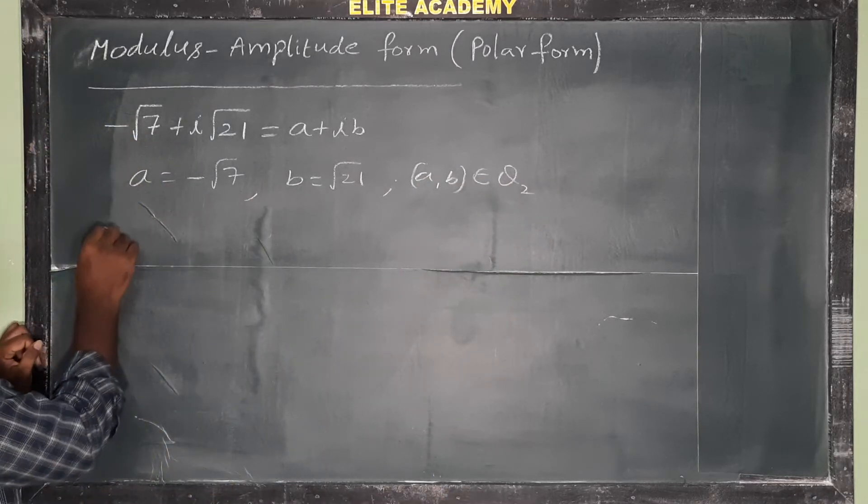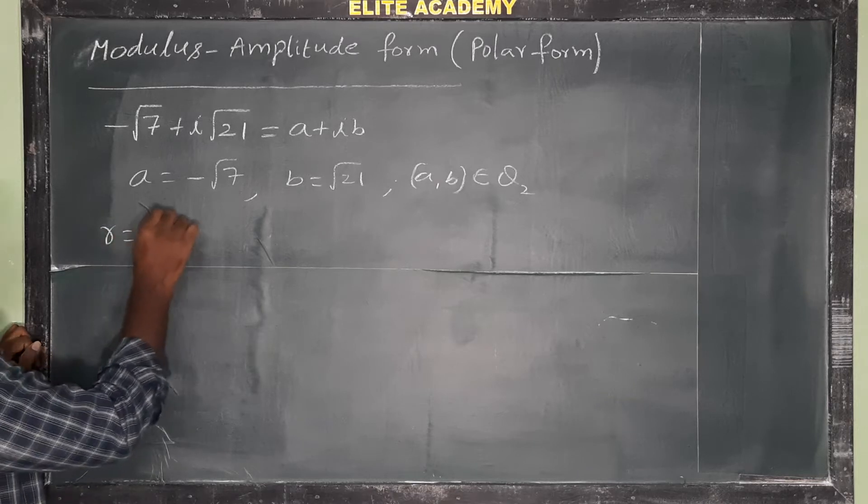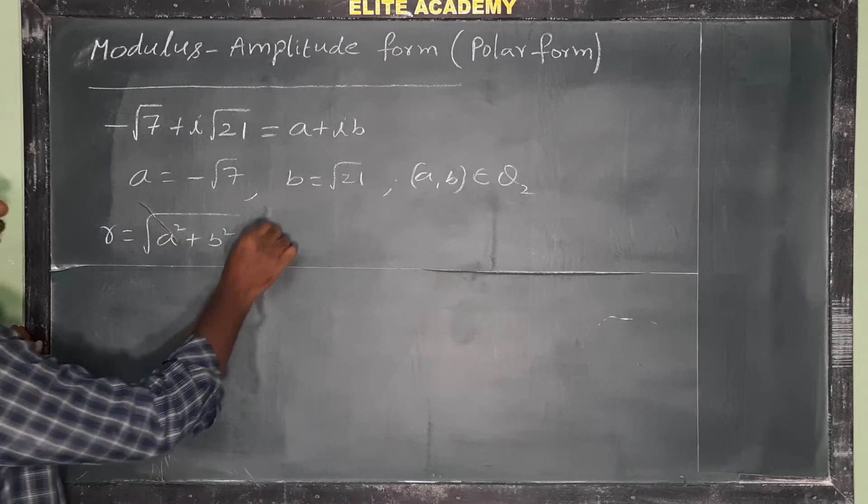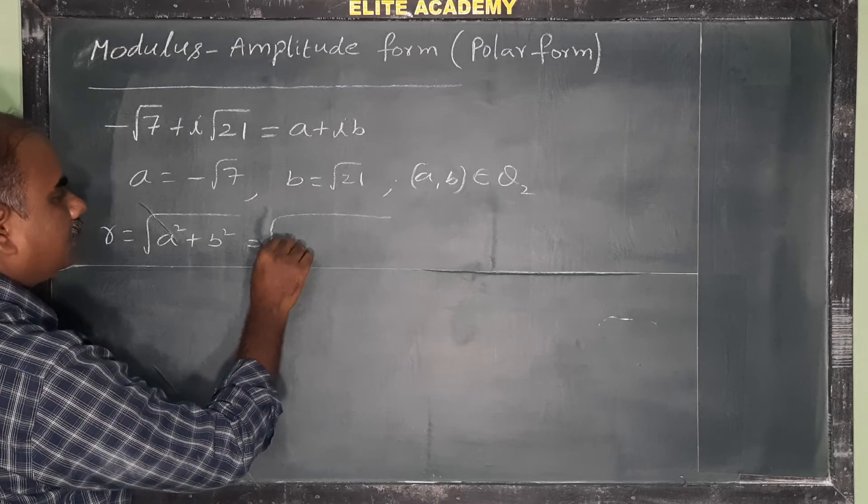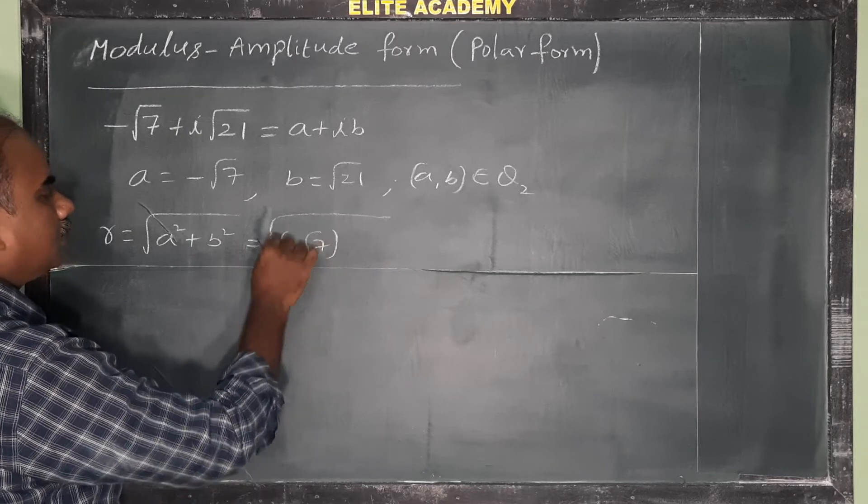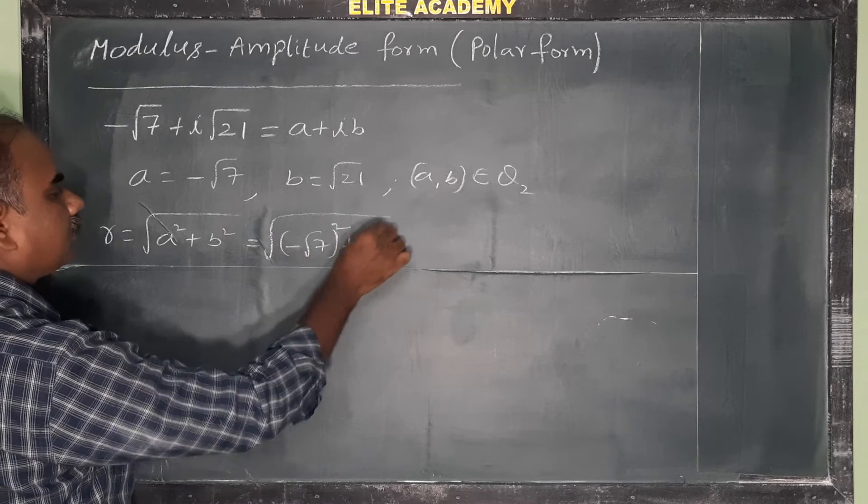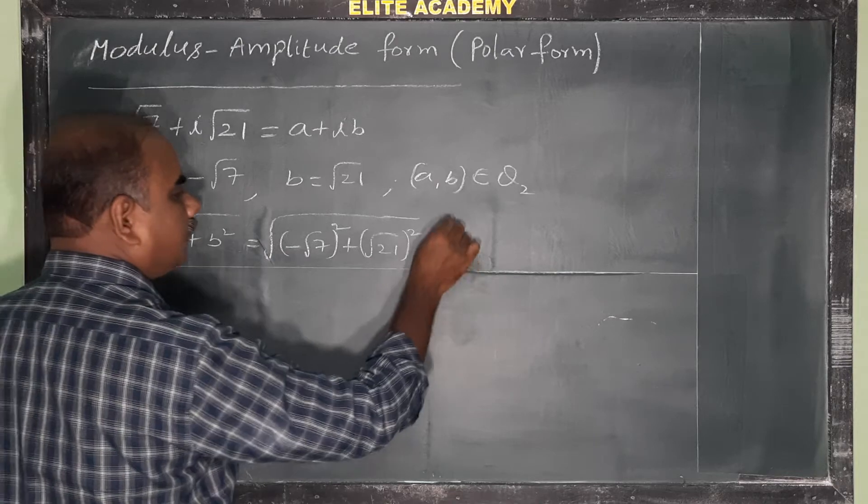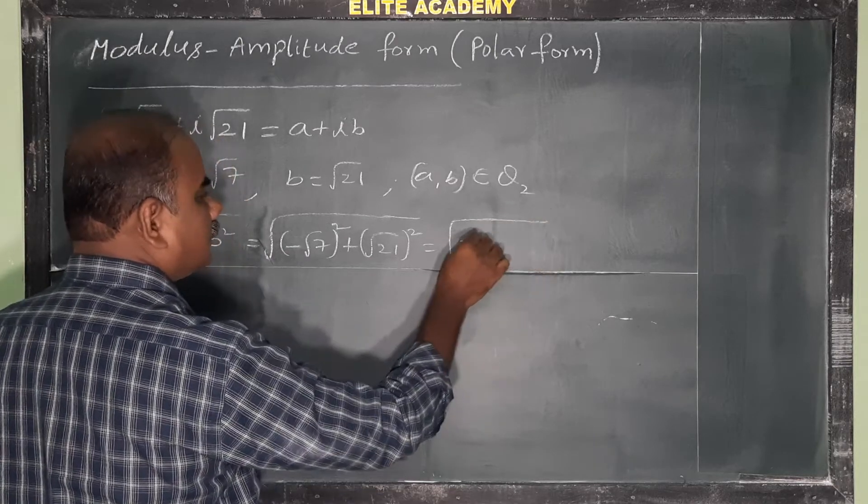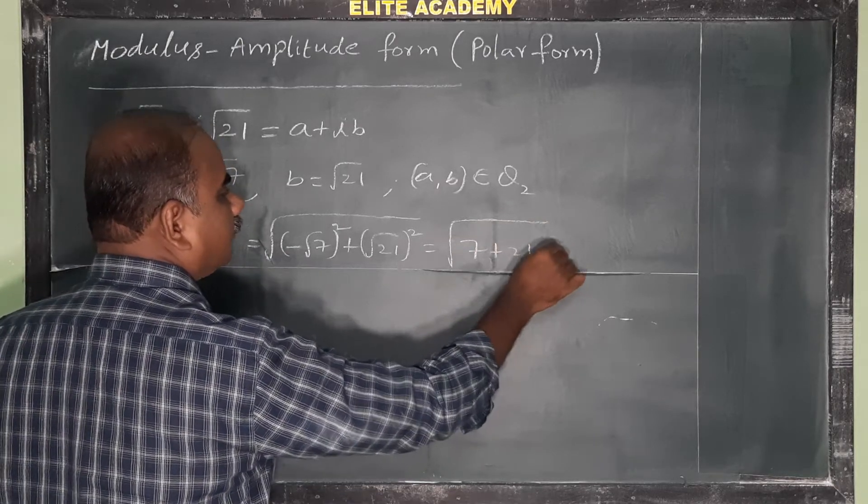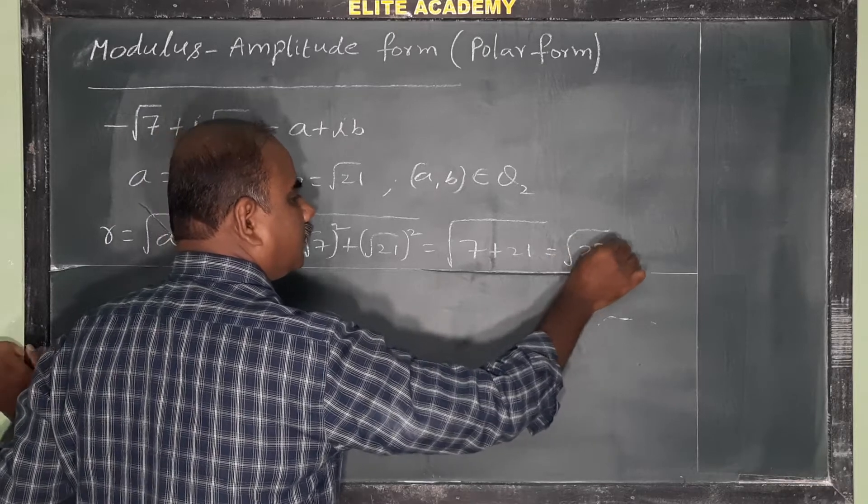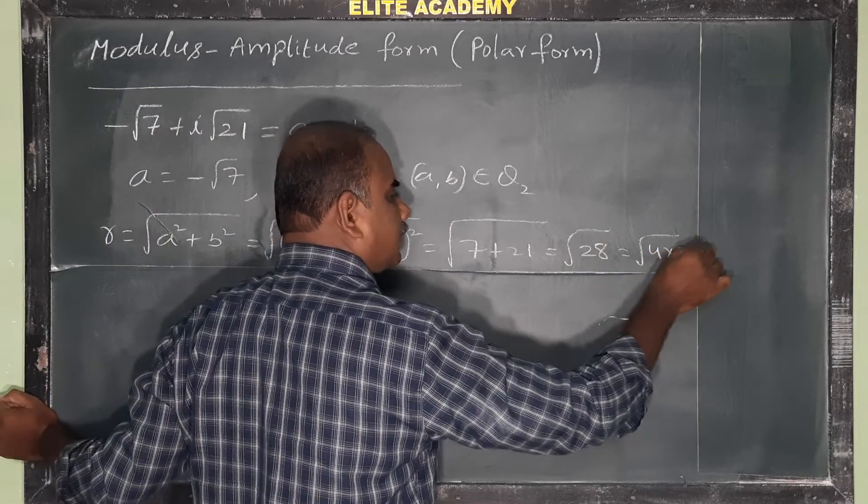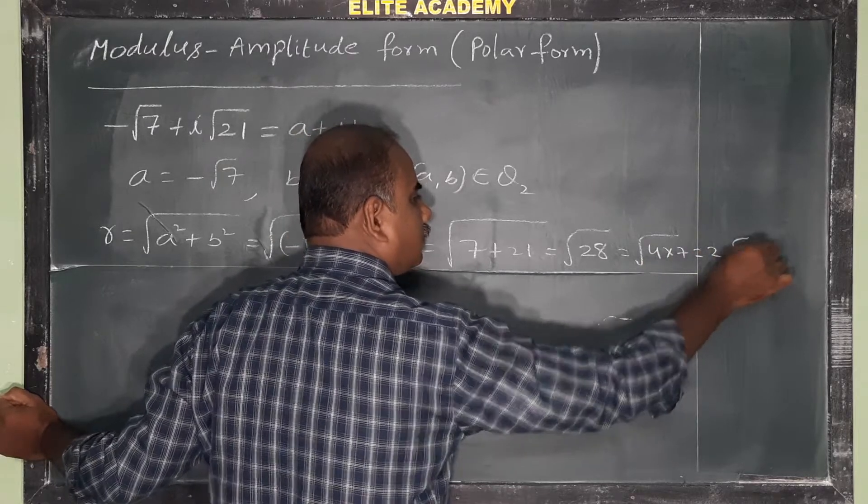Next, to find the value of root of a square plus b square. So a square means minus root 7 whole square plus b square means root of 21 whole square. And this is equal to 7 plus 21, root of 28, and this can be written as 4 into 7. Finally, it is equal to 2 root 7.